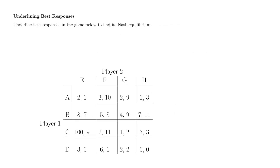Here is the same game from the previous video's iterated elimination exercise. Pause the video and underline to find each player's best responses to the other player's strategies. What Nash equilibrium do you find? When you are done, resume the video to see a solution.